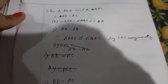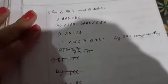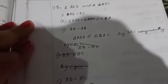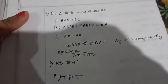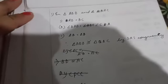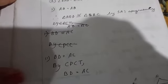Whenever you are given any geometry question, always write what is given and what you need to prove, then proceed for the answer. In triangle ABD and triangle BAC, AD is equal to BC, angle DAB is equal to angle CBA, and side AB is common to both triangles. Therefore, by SAS congruency, by CPCT, BD is equal to AC.